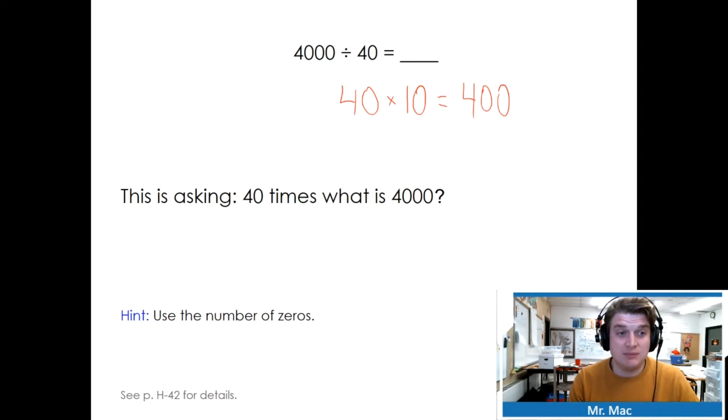If we went 40 times 10, we would get 400. We need to keep going. 40 times 100 equals... Remember, we count the number of zeros. Three zeros. And we find our answer. 4,000 divided by 40 equals 100.